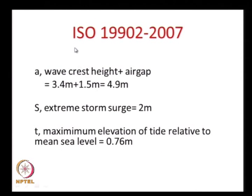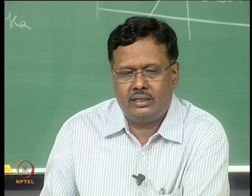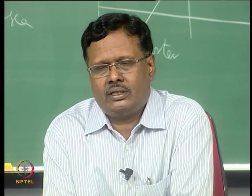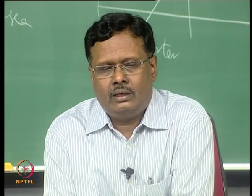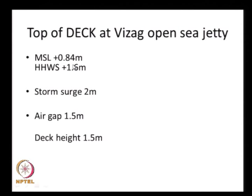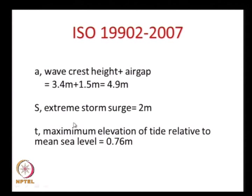We have all the information. The ISO 19902:2007 code, in which more than 100 countries including India participate, defines three parameters: A, S, and T. A is wave crest height plus air gap — wave crest height is half the wave height = 3.4 meters, plus air gap 1.5 meters, giving A = 4.9 meters. S is the extreme storm surge = 2 meters. T is the maximum elevation of tide relative to mean sea level: 1.6 minus 0.84 = 0.76 meters.